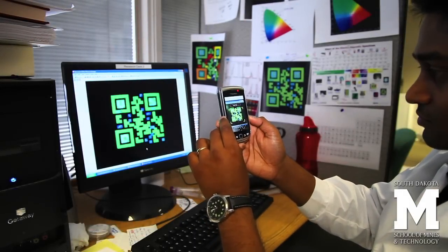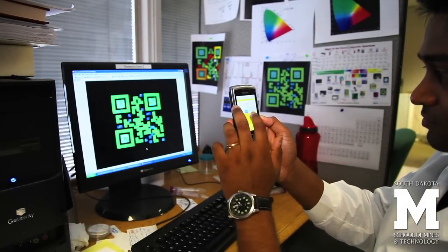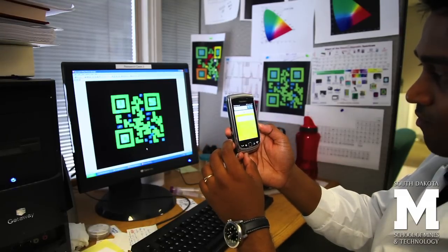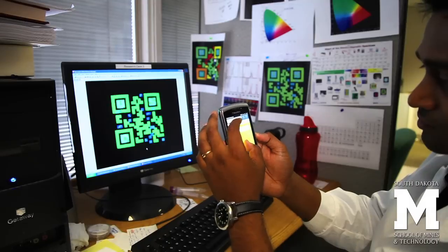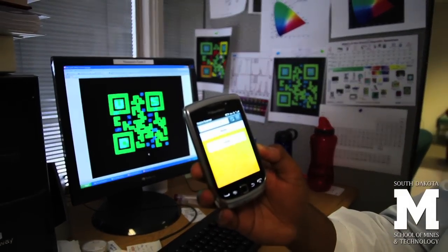Once we got the QR code, we scan it using a smartphone QR code application, and it readily scans into whatever we put into the QR code. In this case, we used our school's name: SDSMNT, South Dakota School of Mines and Technology.